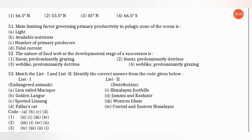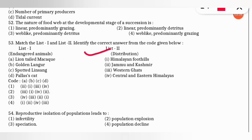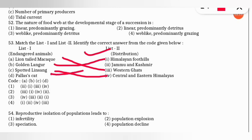The next match-the-following pairs endangered animals with their locations in India: lion-tailed macaque — Western Ghats; golden langur — Himalayan foothills; spotted linsang — Central and Eastern Himalayas; pallas cat — Jammu and Kashmir. The correct option is option 2.